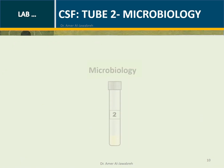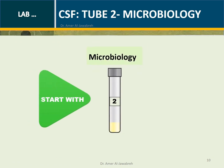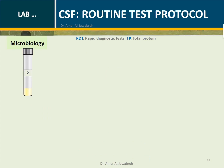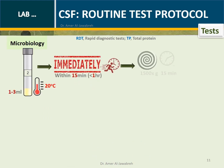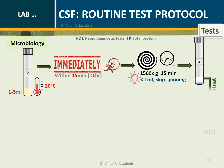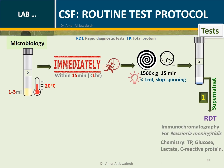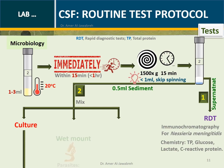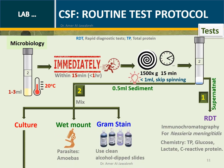CSF Tube 2 — Microbiology: Always start with Tube 2. If only one tube is available, microbiology comes first. CSF routine test protocol: at room temperature, immediately spin at 1500 g for 15 minutes. If volume is less than 1 ml, skip spinning. Take the supernatant for RDTs and chemistry. The 0.5 ml sediment is plated on culture media and spread on clean slides for wet mount and gram stain.